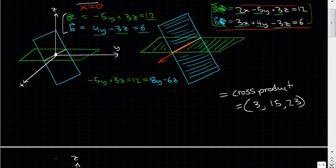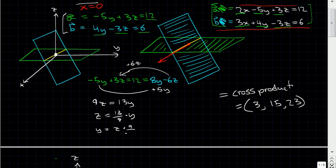So then we get, and we take the, let's take the 6s over, so we have plus 6z, then we'll take this over, so we're going plus 5y, and then that leaves us with 9z equals 13y. And then we can say that z equals 13 divided by 9 times y and y equals z times 9 divided by 13.